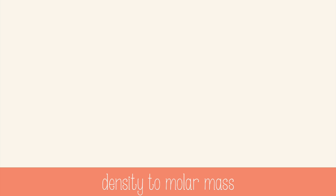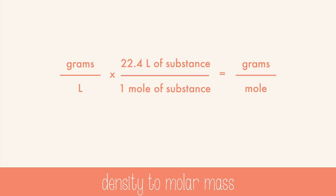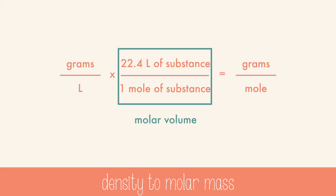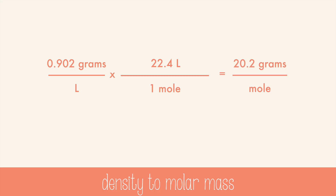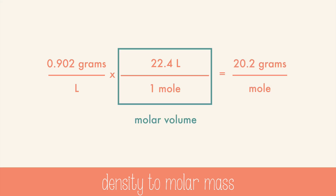You can also find out the molar mass of a gas using only its density at STP. Density is grams per liter. If you multiply by the molar volume, liters cancel and you're left with grams per mole, which is the molar mass of the substance. For example, start with a given density like 0.902 grams per liter, multiply by the molar volume, and you get the molar mass — 20.2 grams per mole in this case.